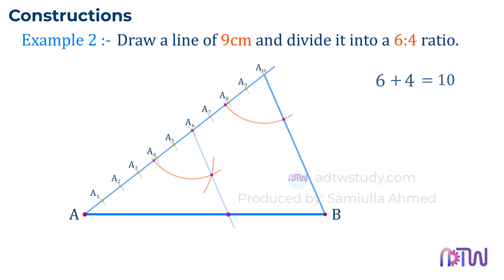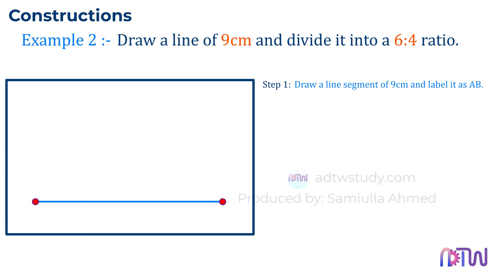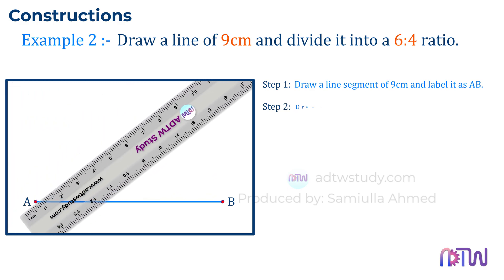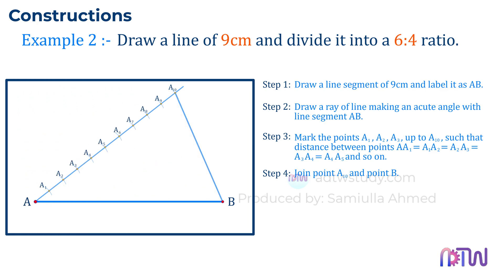Now let's write down the steps which we just performed. Step 1: Draw a line segment of 9 centimeters and label it as AB. Step 2: Draw a ray of line making an acute angle with line segment AB. Step 3: Mark the points A1, A2, A3, up to A10 such that distance between point A-A1 equals A1-A2 equals A2-A3 equals A3-A4, and so on. Step 4: Join endpoint A10 and endpoint B of the line.